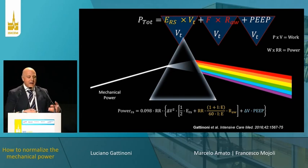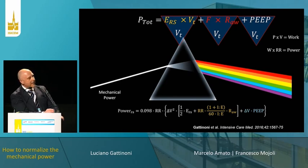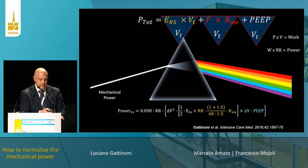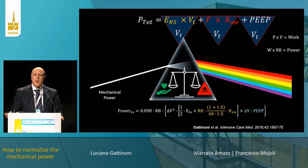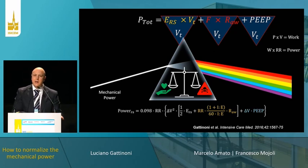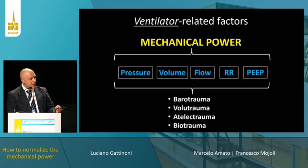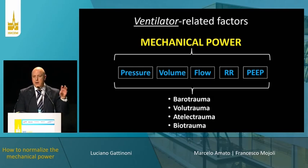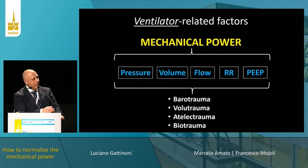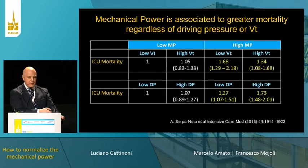That's the formula for volume control with constant flow. You can see the elastic pressure, the resistive pressure, and the PEEP pressure. What we're trying to do is find a way to deliver the right amount of power — not excessive power that might harm the lung, but not too low that might make the lung deteriorate, but just enough to protect it. We can also have a simplified formula for pressure control ventilation. The ingredients of mechanical power are essentially those involved in barotrauma, volutrauma, atelectotrauma, and biotrauma that we're trying to avoid.